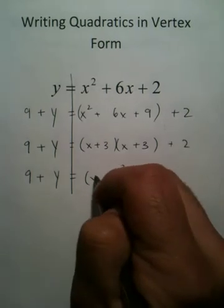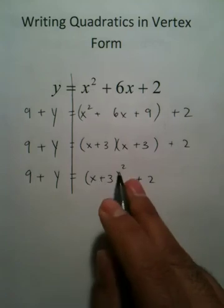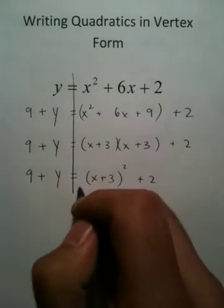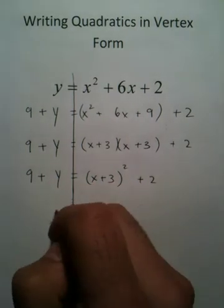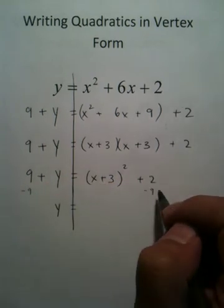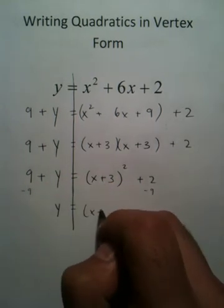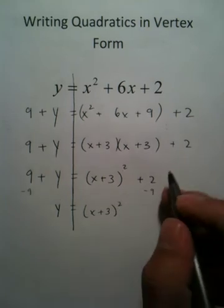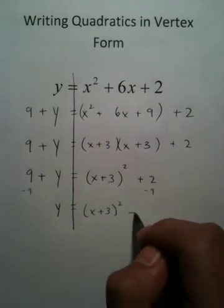Then, as you can clearly see, since they're identical, you're going to have a power of 2. Last step is always get y by itself. So you're going to minus 9 to both sides of the equation. This x plus 3 stays exactly the way it is. 2 minus 9 makes negative 7.